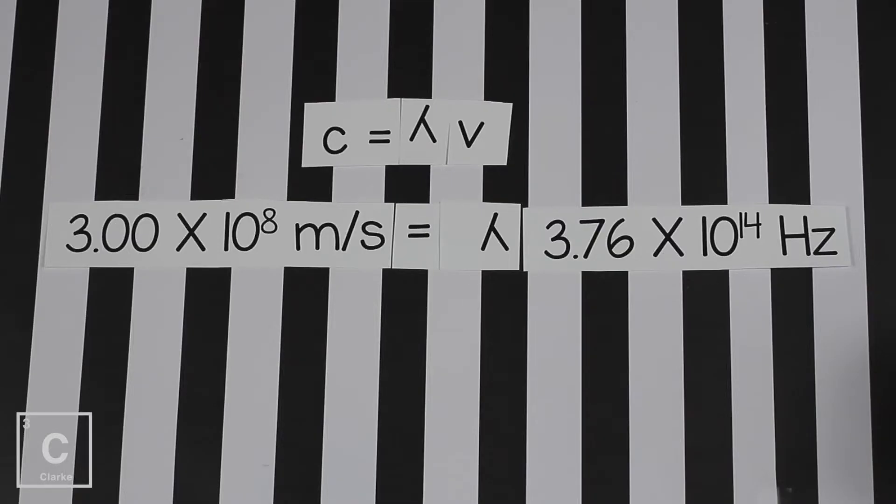We use the formula for speed of light. Speed of light is 3.0 times 10 to the 8 meters per second. I just put that where C is for the speed of light. And then we're solving for wavelength. So I left Greek letter lambda for wavelength. You could put an X if you like X better. That makes us think of algebra. And then we've got frequency, Greek letter nu. And I put the frequency from the problem. That was the given number in the problem.